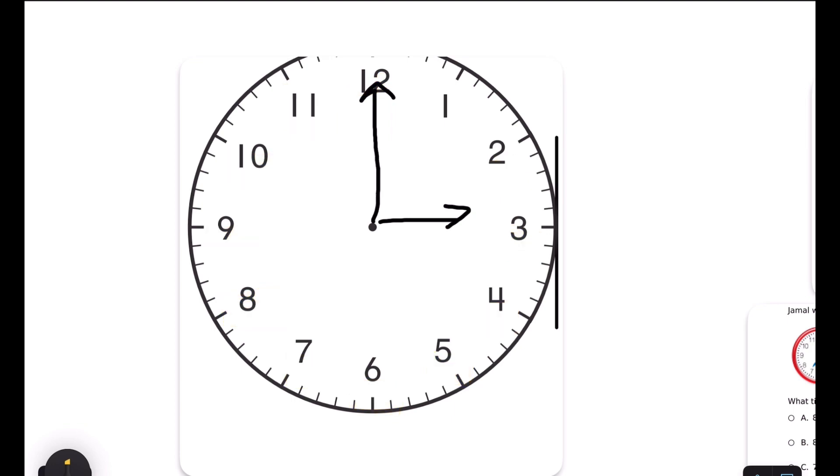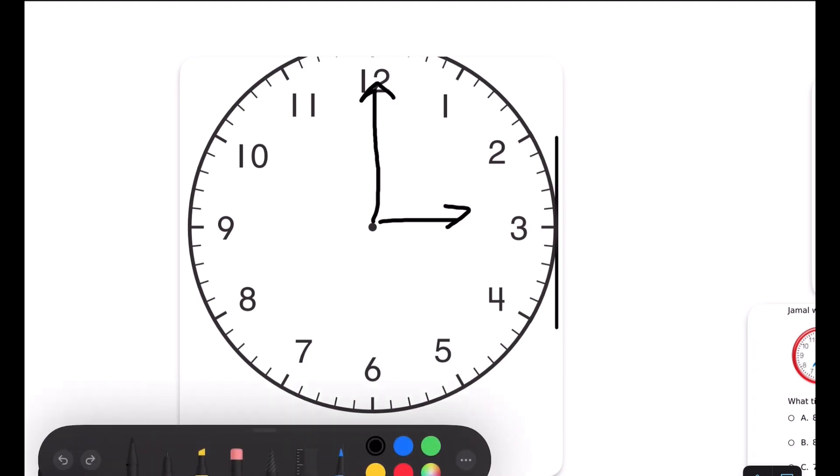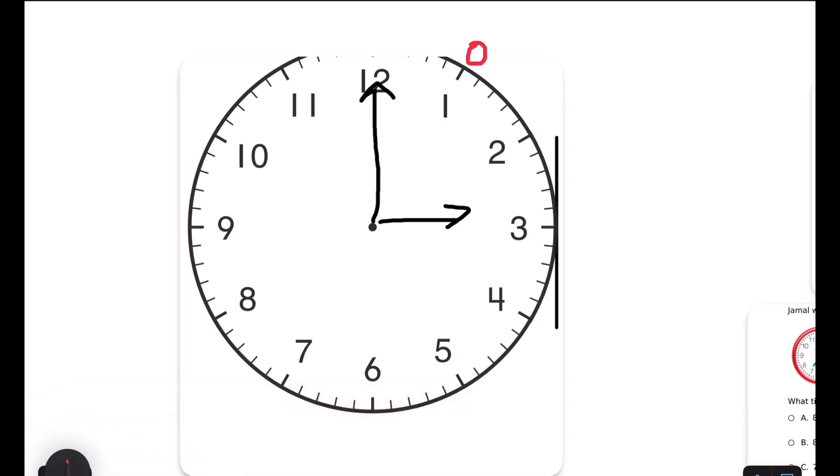But the long hand tells the minute, and the hand is so long that it counts up by fives. That changes all of our numbers on our clock. Because the 1 does not represent 1 if the minute hand is pointed on it, it represents 5.